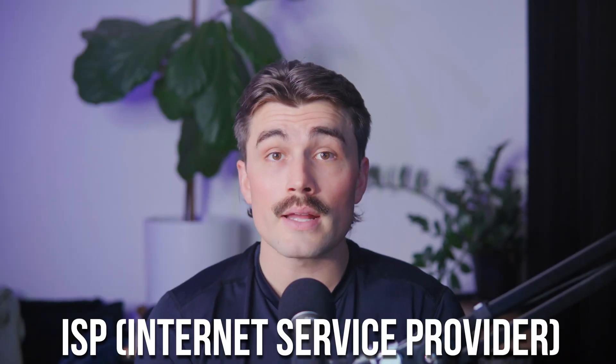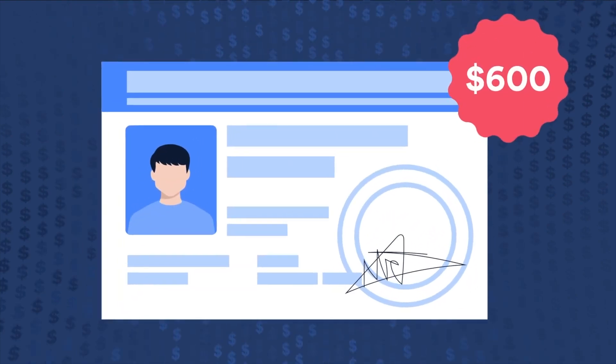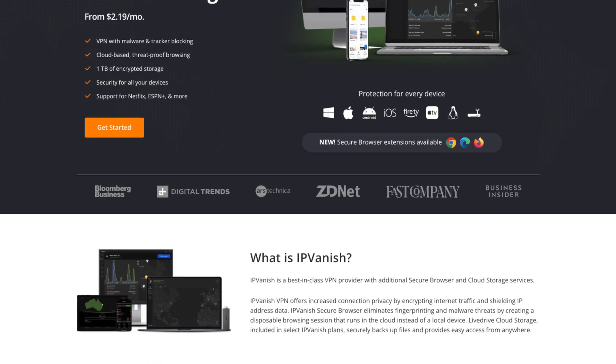Your ISP — your internet service provider — is the company that provides your internet connection, like Comcast, AT&T, or Verizon. They can track your browsing activity, throttle (meaning slow down) your connection when streaming, and even sell anonymized user data to advertisers. This is why using a VPN matters — it encrypts your connection, keeping your online activity private, and preventing your ISP from monitoring or limiting your internet speed.